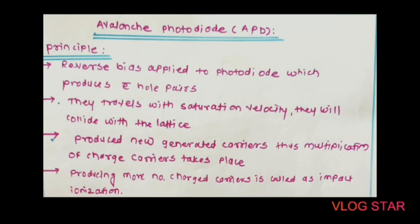The avalanche photodiode, or APD — as we know, in the case of a conventional photodiode and PIN photodiode the output current is very small because these photodiodes have a limited gain. In order to obtain large gain, that is large output, avalanche photodiodes are used. In this case, a reverse bias is applied to the photodiode which is near to the breakdown value, and the incident light produces electron-hole pairs.